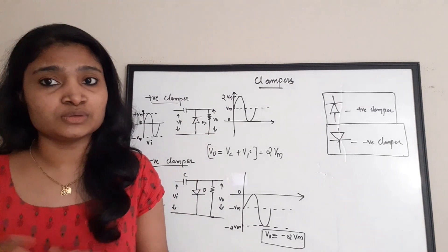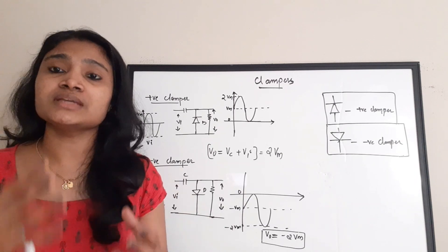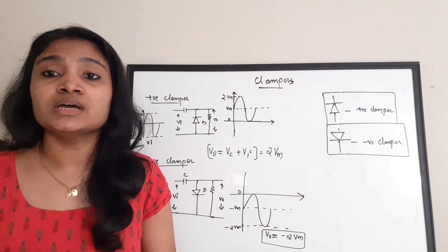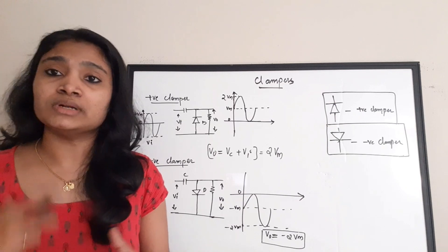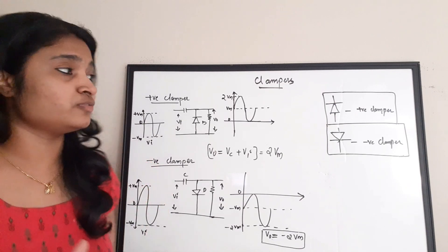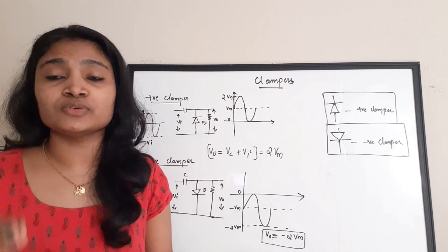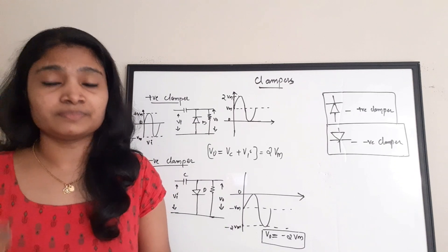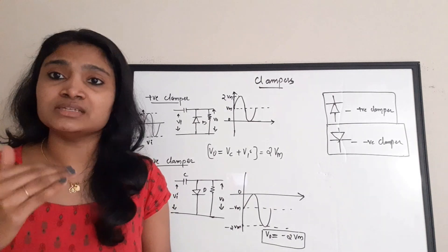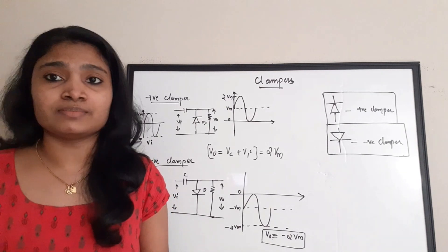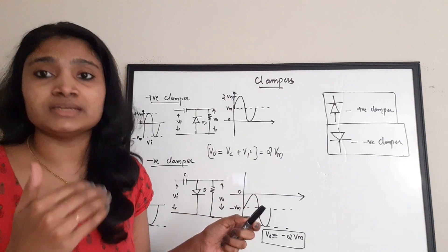The main difference between clippers and clampers is that clippers are wave-shaping circuits — they modify or manipulate the shape of an input waveform. Clampers, on the other hand, are used for shifting the DC level of your signal — that is, either adding or subtracting a DC level. There is no change in the shape of the output waveform; only the DC level is being shifted.